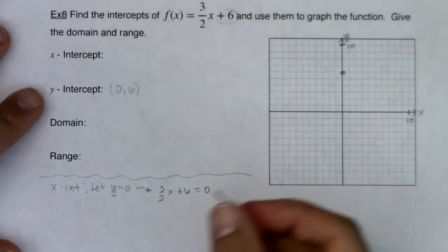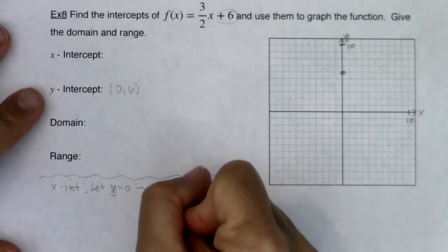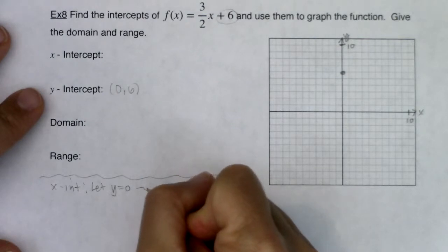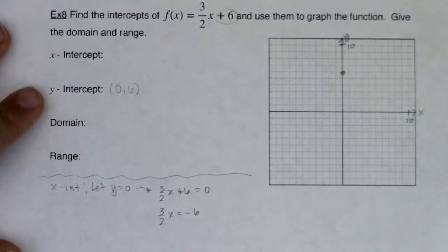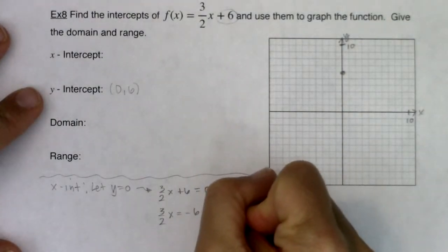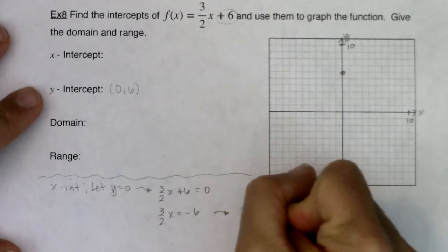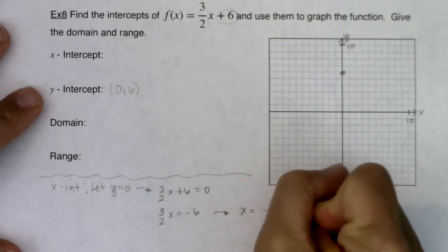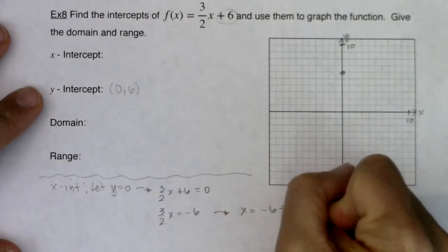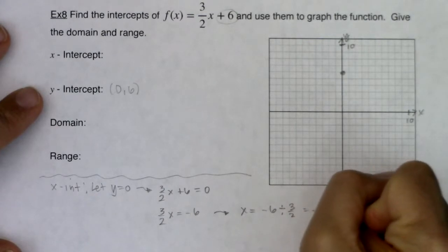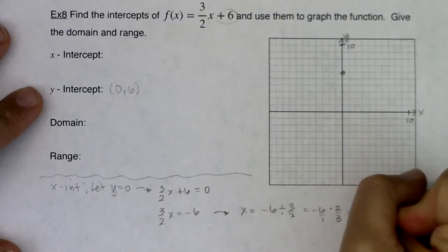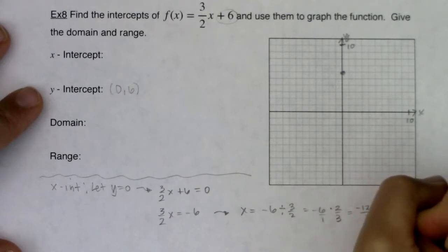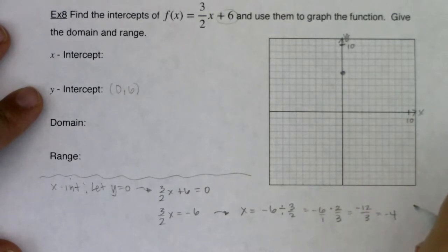Well, if I want to solve that, I'm going to move the six over and get (3/2)x is equal to negative 6. And then I want to divide by three halves on each side. So I'm going to find out x is equal to negative 6 divided by three halves, which is like saying negative 6 times two thirds. And when I play that out, this is 6 over 1. So this will ultimately be negative 12 over 3, which is negative 4.